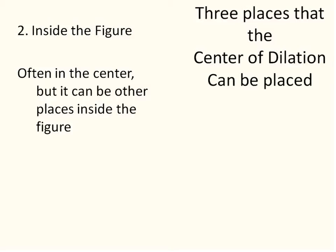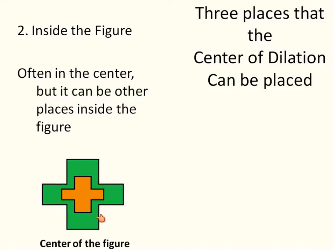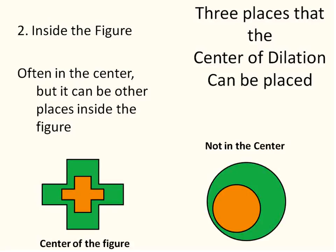The second place you could put a center of dilation is inside the figure — it's often in the center, but it can be placed other places. Here's an example where it's right in the center: the preimage is the green figure and the image is the yellow one, which just shrunk right down into the center. You can also have it shrink off to the side. In most cases if it's inside the figure it'll be in the center, but you can basically place it anywhere inside the figure.